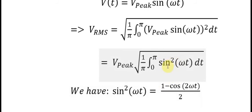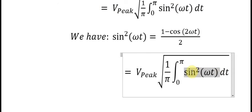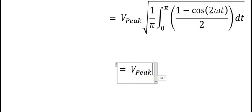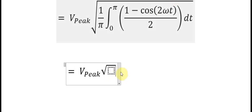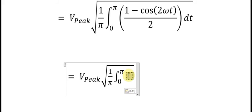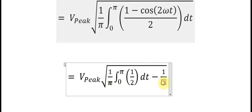Now we replace sin²(ωt) with this identity. We separate the terms: we have 1 over 2 and cos(2ωt) divided by 2, and we will separate them with 2ωt in the expression.